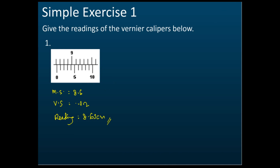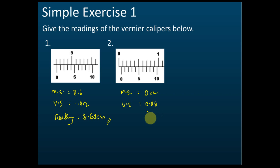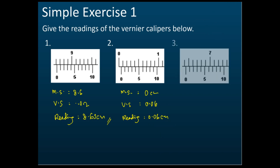How about this one? This time, straight away tell me the reading. The main scale reading is 0 cm, the vernier scale is 0.06, so the reading is just 0.06 cm. There's one example done.